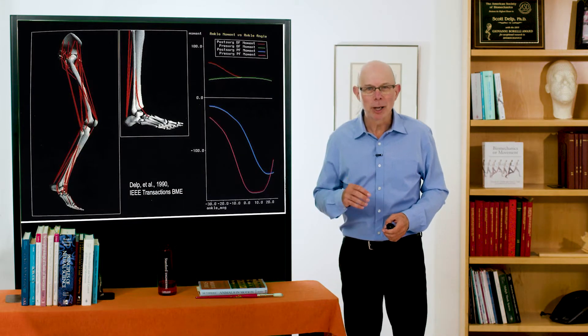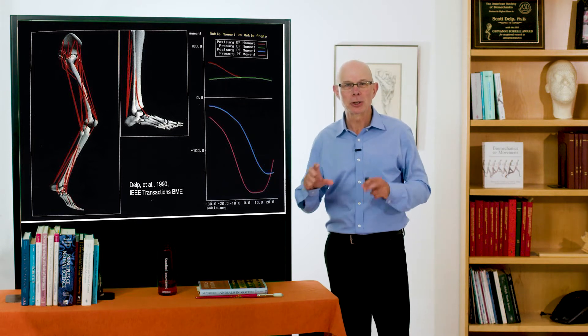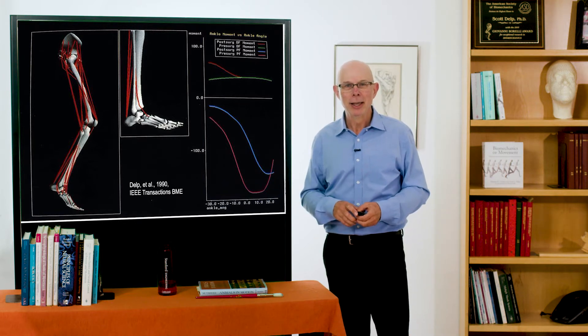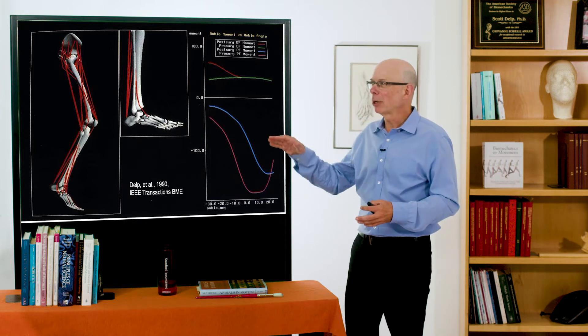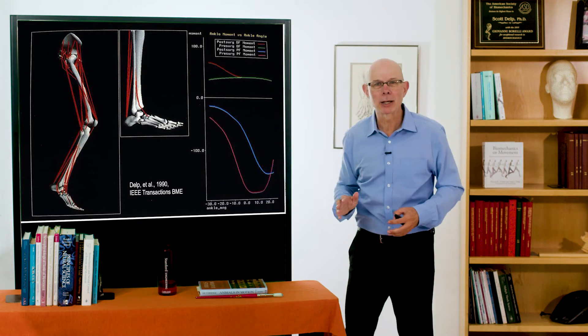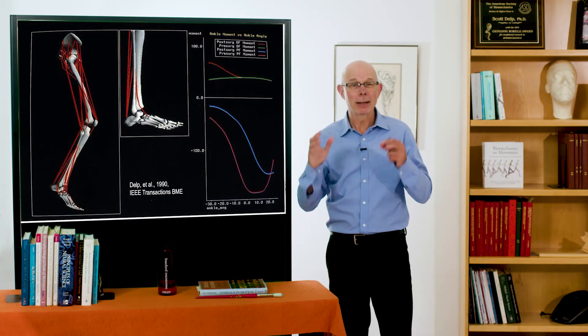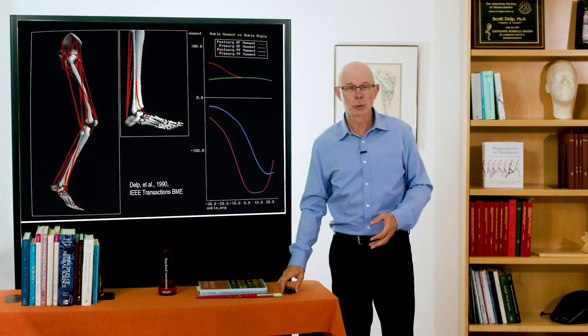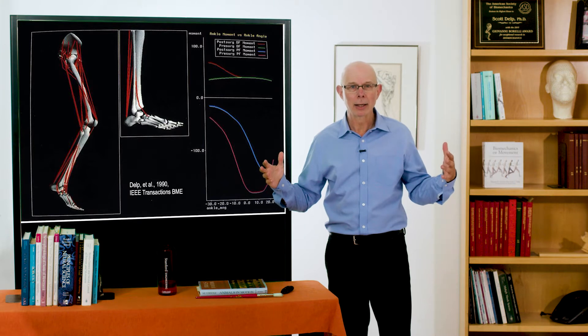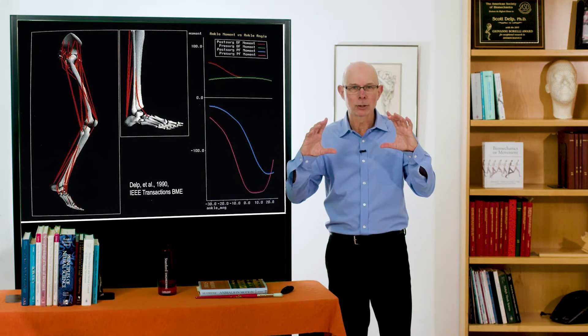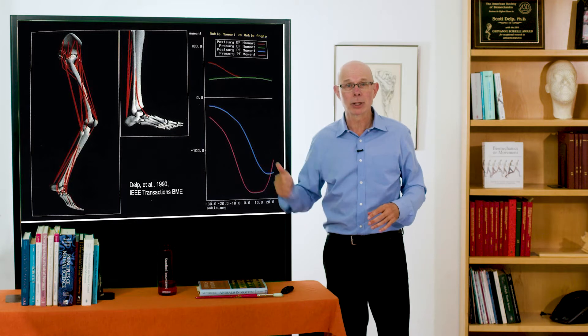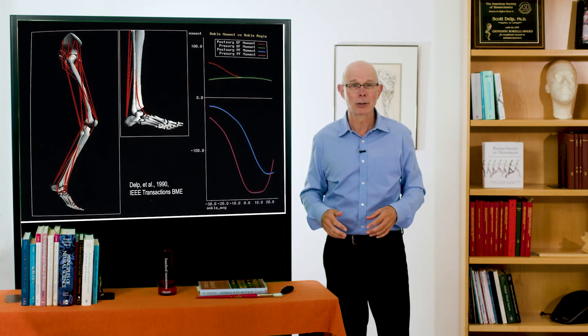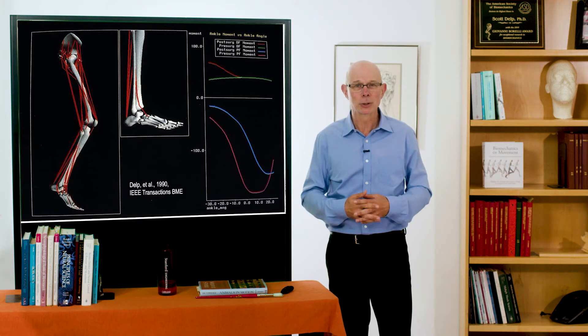When I finished my PhD in 1990 and took this picture to include in my dissertation, notice the picture has curved edges. That's because the only way I could make a picture to include in a document was to wait until it was dark at night, point a camera at the screen. The computer to display an image like this cost more than $100,000 and had less power than a smartphone.